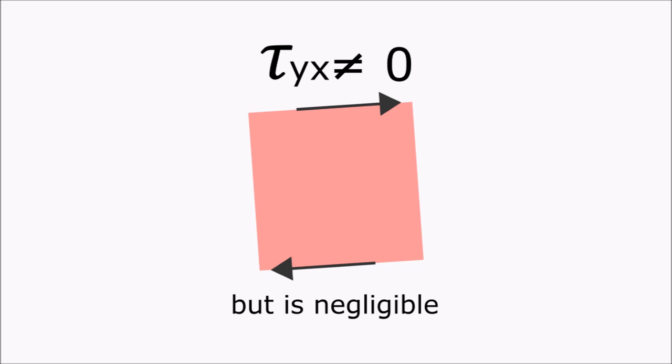Now while this tau_yx actually exists, it really is so small that it doesn't really make a difference. Euler-Bernoulli still applies here, because the angular distortion that is caused by this tau_yx force is so small, it's negligible compared to the bending deformation of the whole beam.